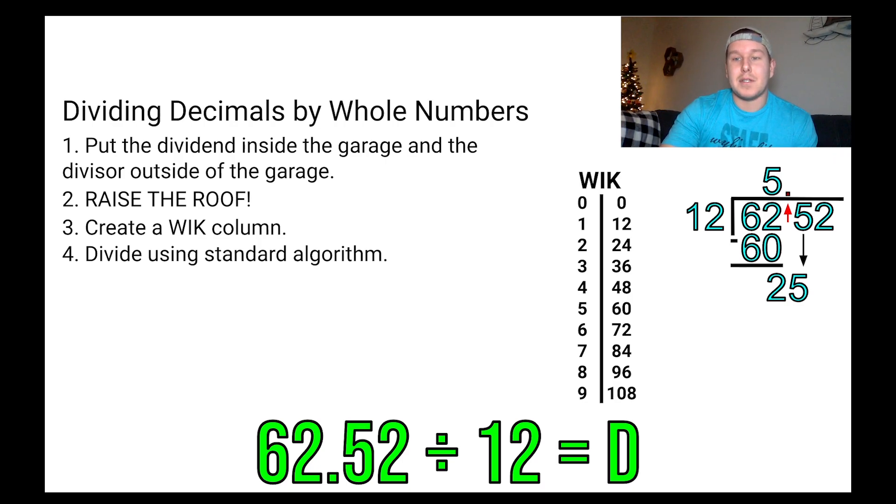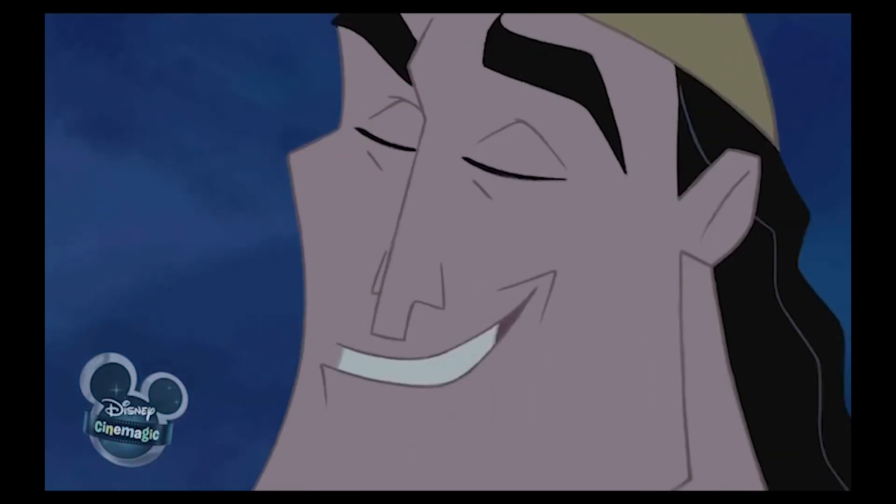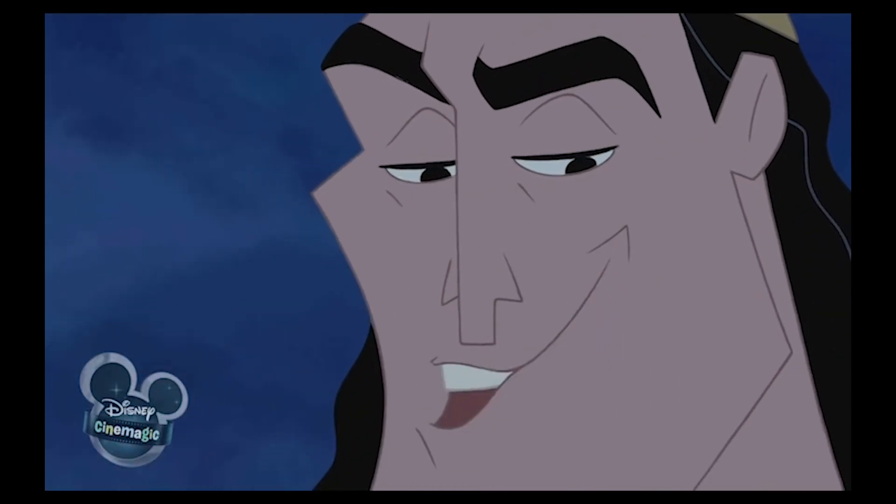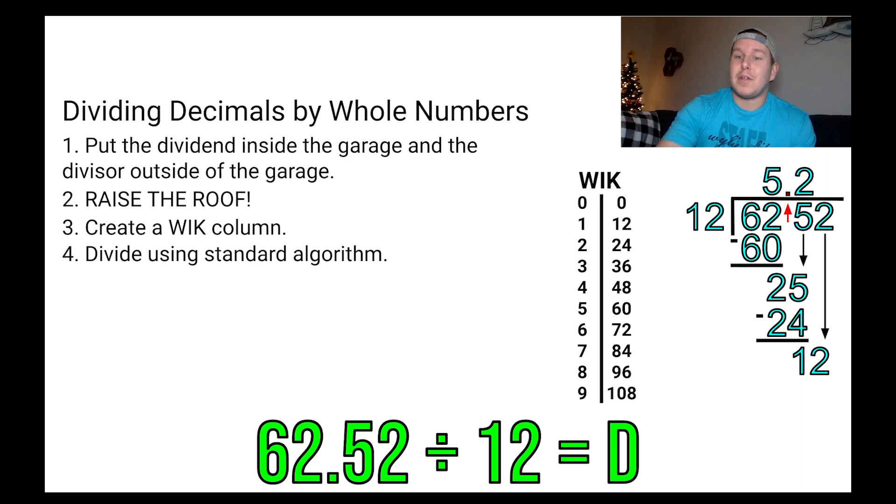And then we just repeat that process. We asked ourselves, how many times does 12 fit into 25? That fits in twice. 2 times 12 will give us 24. And we subtract, we get 1 and we bring down the next number. Oh yeah, it's all coming together. Looks like we're going to get a good answer. So we know that 12 fits into 12 one time. 1 times 12 equals 12. We subtract that and we get that donut we so desire. Such a good reward to get the donut at the end.